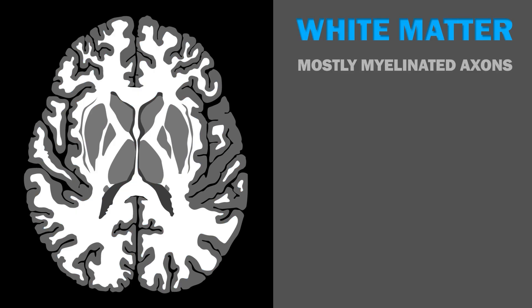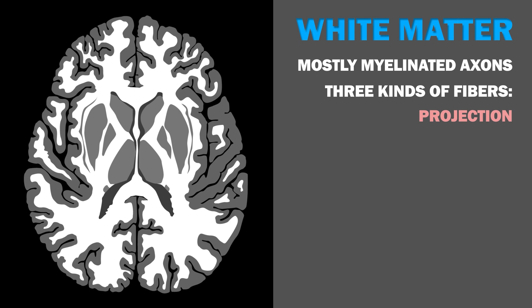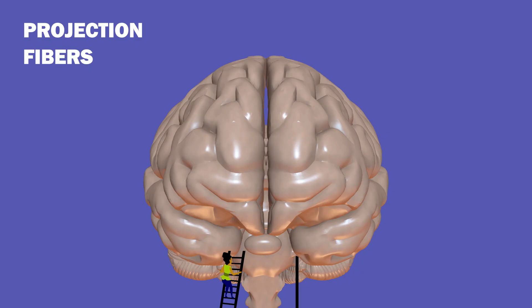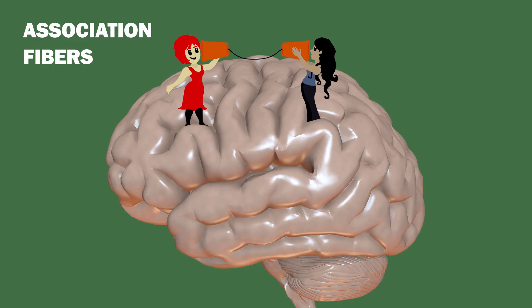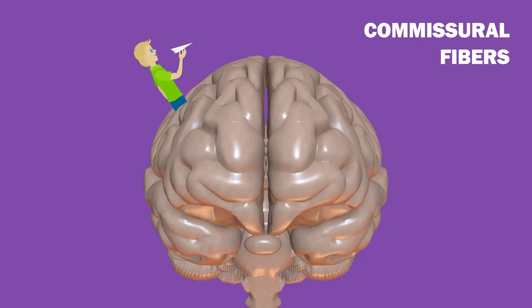White matter is mostly made up of myelinated axons and relays information between brain regions. There are three types of white matter fibers: projection, association, and commissural fibers. Projection fibers connect the cortex with the brainstem and spinal cord. Association fibers connect different regions within the same hemisphere, while commissural fibers connect the same cortical areas in opposite hemispheres.